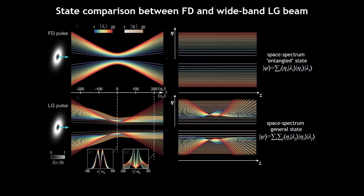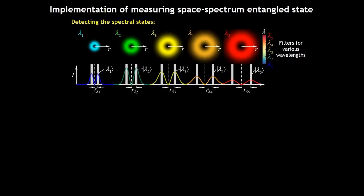So, the spatial and the spectral states are surely randomly separable upon propagation. So there are possibly many crosstalk terms in the general space spectral state. How to measure the spectral and spatial entangled state in experiments?